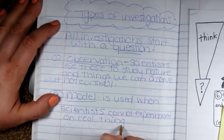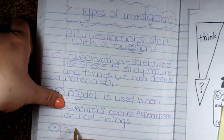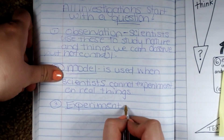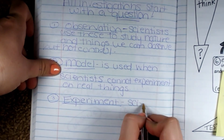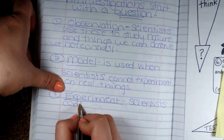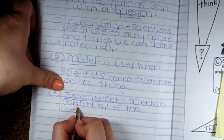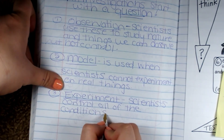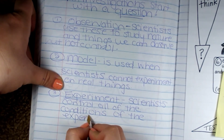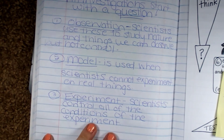Can you think of another model? And the last one is an experiment, where scientists control all the variables — all the conditions. If they want to do it in a science lab, they do it in a science lab. If they want to do it outside, they do it outside. They control everything about it. So those are the types of investigations.